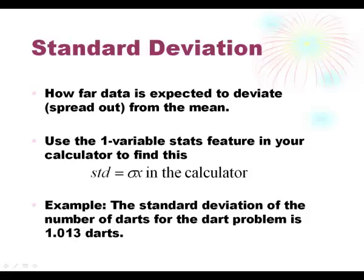Standard deviation. This is how far your data is deviating away or spreading out from the mean. On average, use the 1 variable stats feature on your calculator to do this. The same place you do the expected value in your calculator. Standard deviation is towards the bottom of your screen. It's the lower case sigma times x. For example, if you look at the number of darts that we just did in the last example, when you put the data in your calculator and you get your 3.4 expected darts, look towards the bottom of your screen for the lower case sigma, and you'll see that the standard deviation is 1.013 darts. That means you would expect to deviate out about one dart in the high or low on average.